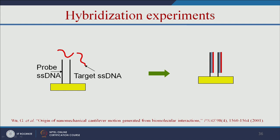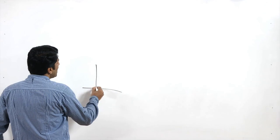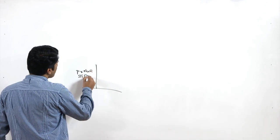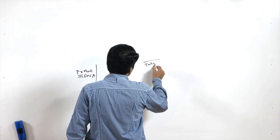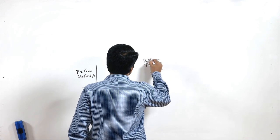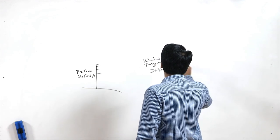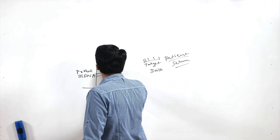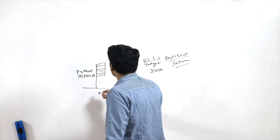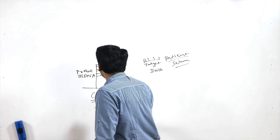For DNA hybridization-based CNT sensors, a single-stranded DNA probe is added to the carbon nanotubes. A target single-stranded DNA from patient serum is then introduced. When the patient's DNA hybridizes with the probe DNA, the electrical connectivity property of the CNT changes, allowing disease detection.